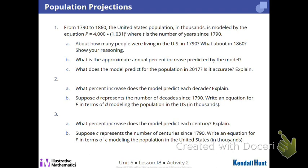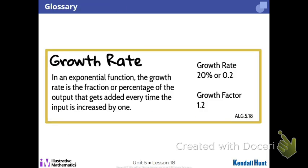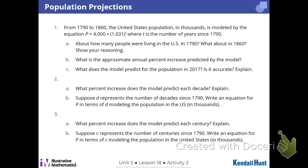It's your job to say how many people were here in 1790 and 1860. So you're going to find out how many people are here using this function. Then you're going to look at the annual percentage increase from the function predicted by the model. And then what is the prediction for 2017? And is that accurate? So we're just going to do 1abc to start.